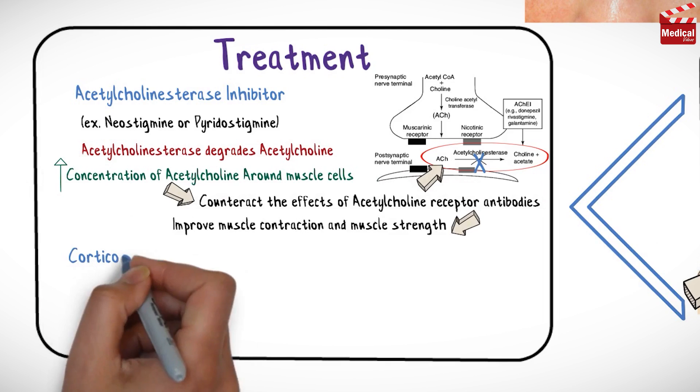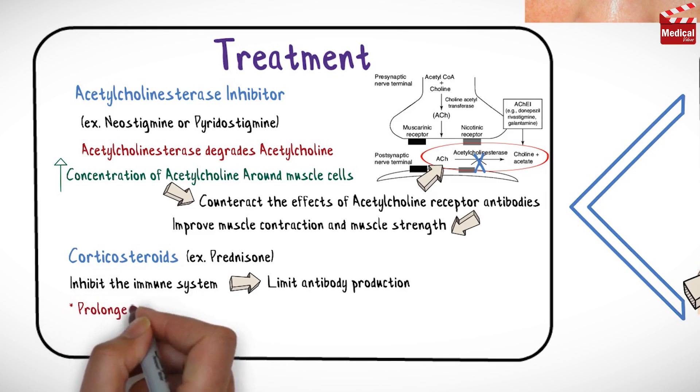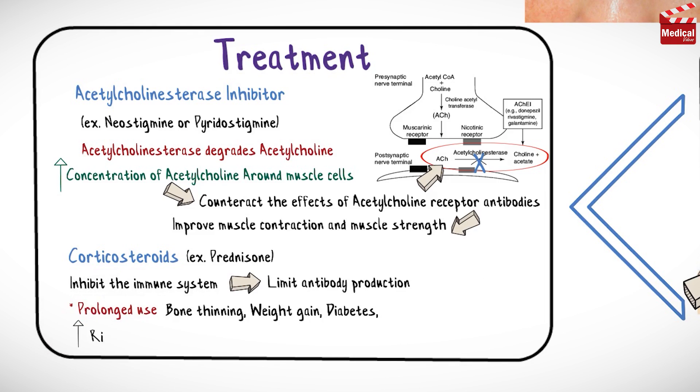Another type of medication is corticosteroids such as prednisone, which inhibit the immune system which then limits antibody production. Note that prolonged use of corticosteroids can lead to serious side effects such as bone thinning, weight gain, diabetes, increased risk of some infections, and redistribution of body fat.